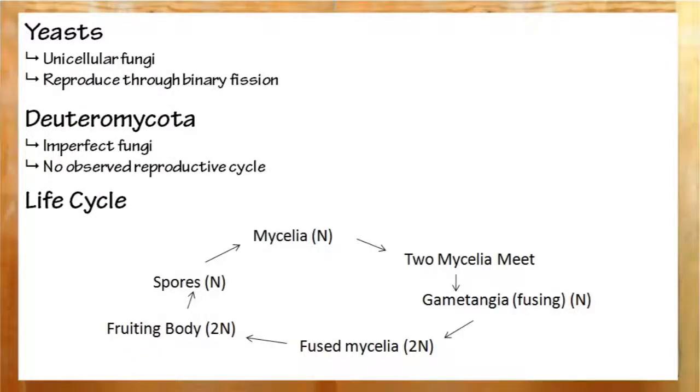Yeast, the only unicellular fungi, these reproduce through binary fission. And deuteromycota, the imperfect fungi, we don't really know how they reproduce since we've never been able to observe them doing it.